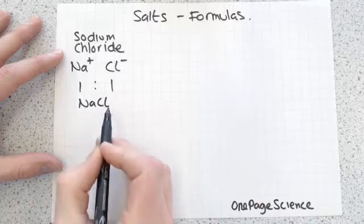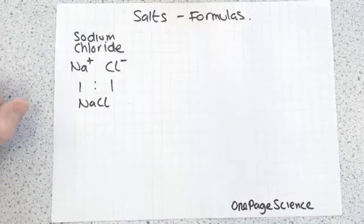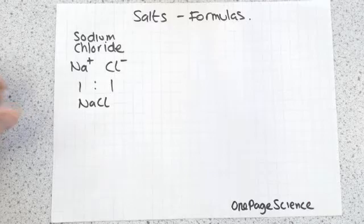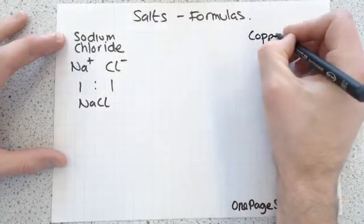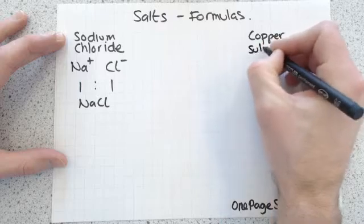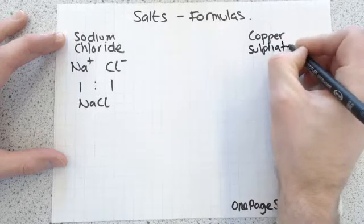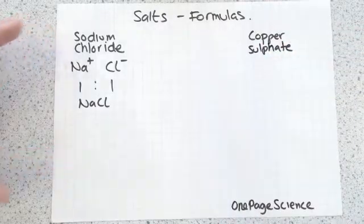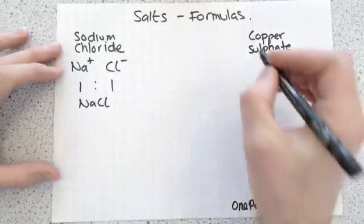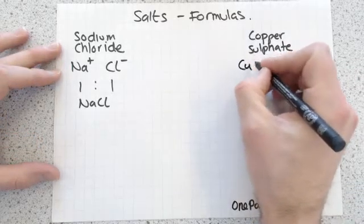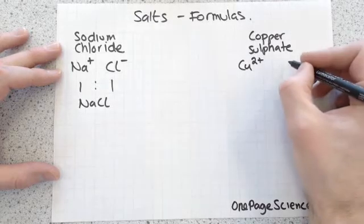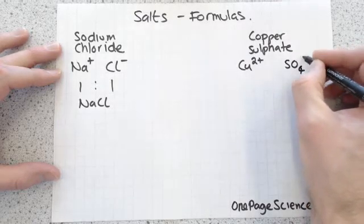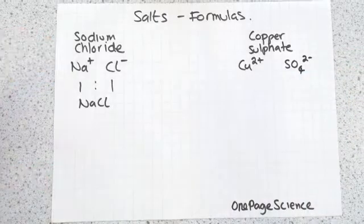Let's take another example, something like copper sulfate. If you go to your periodic table again and you look up copper, you'll find that copper is Cu2+, and a sulfate is SO4 2-.